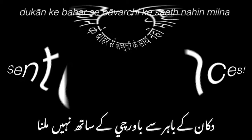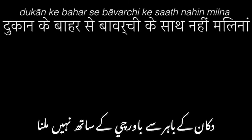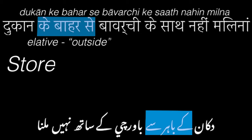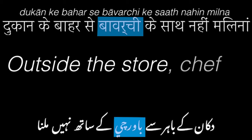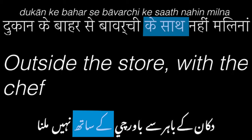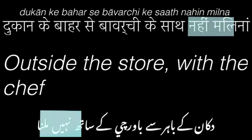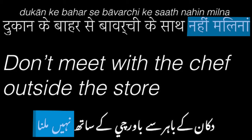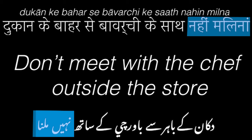To end this video, let's analyse some sentences in Hindi and Urdu. Dukaan ke bahar se bawarchi ke saath nahi milna. Dukaan means store, and adding ke bahar se is an elative marker meaning outside. Bawarchi means a chef — you see this in other words like bawarchi khana meaning a kitchen. Ke saath is an associative marker meaning with, so bawarchi ke saath means with the chef. Milna is the verb to meet, and adding nahi in front, meaning no, makes this verb a negative command. Overall, it means don't meet with the chef outside the store.